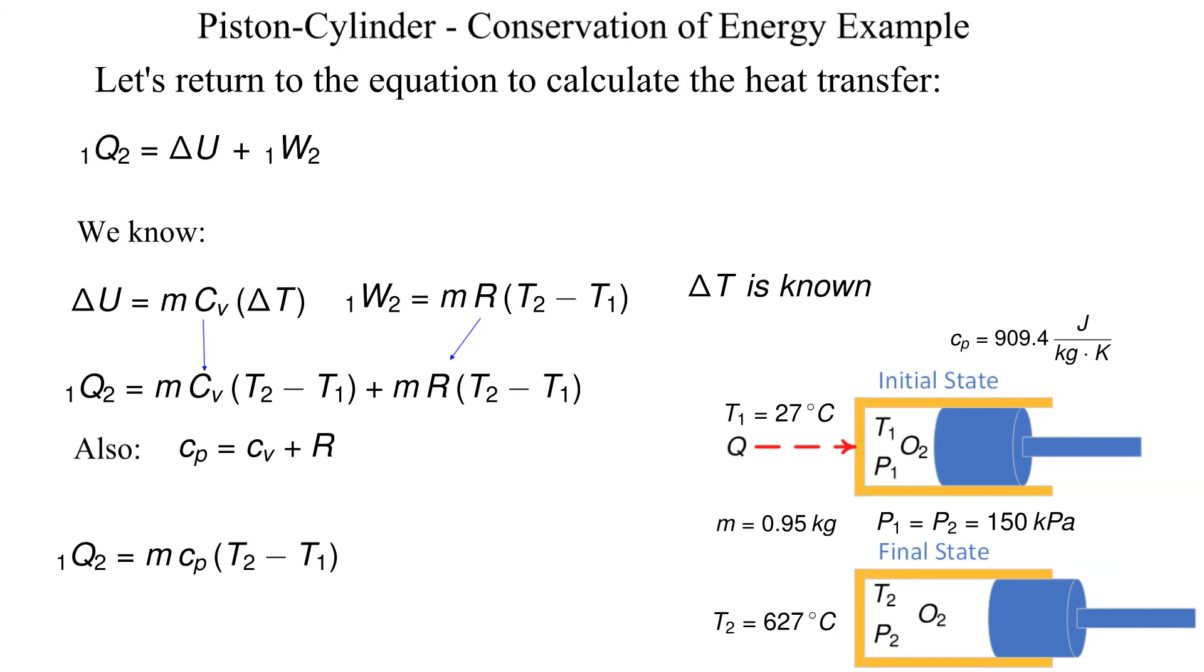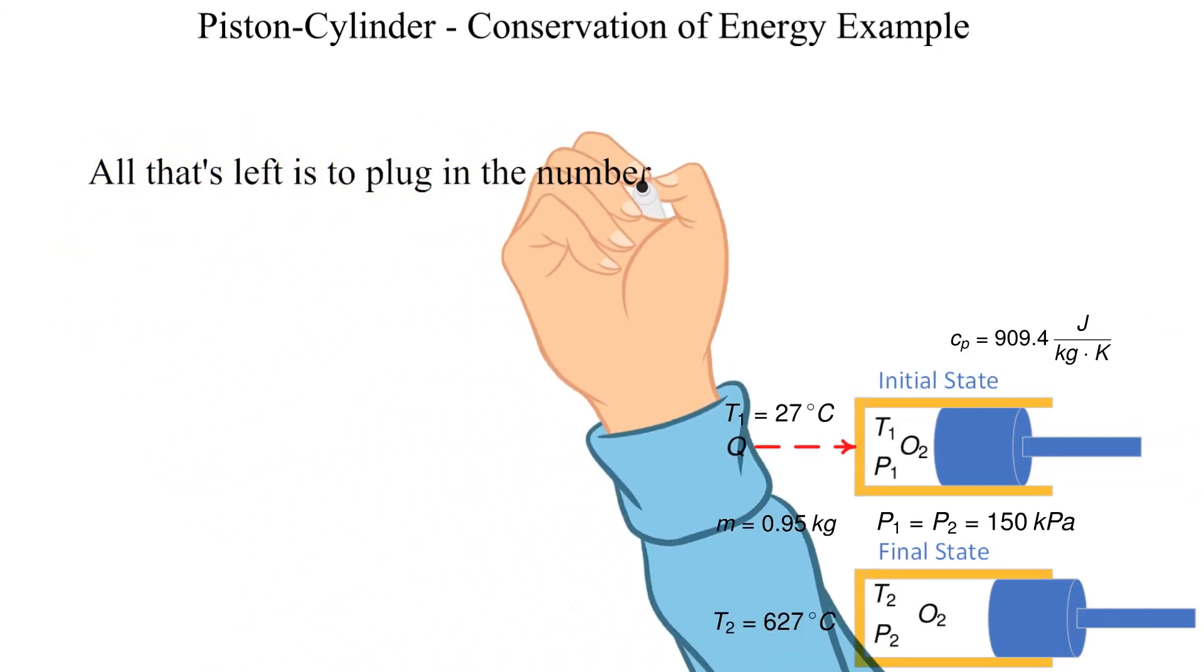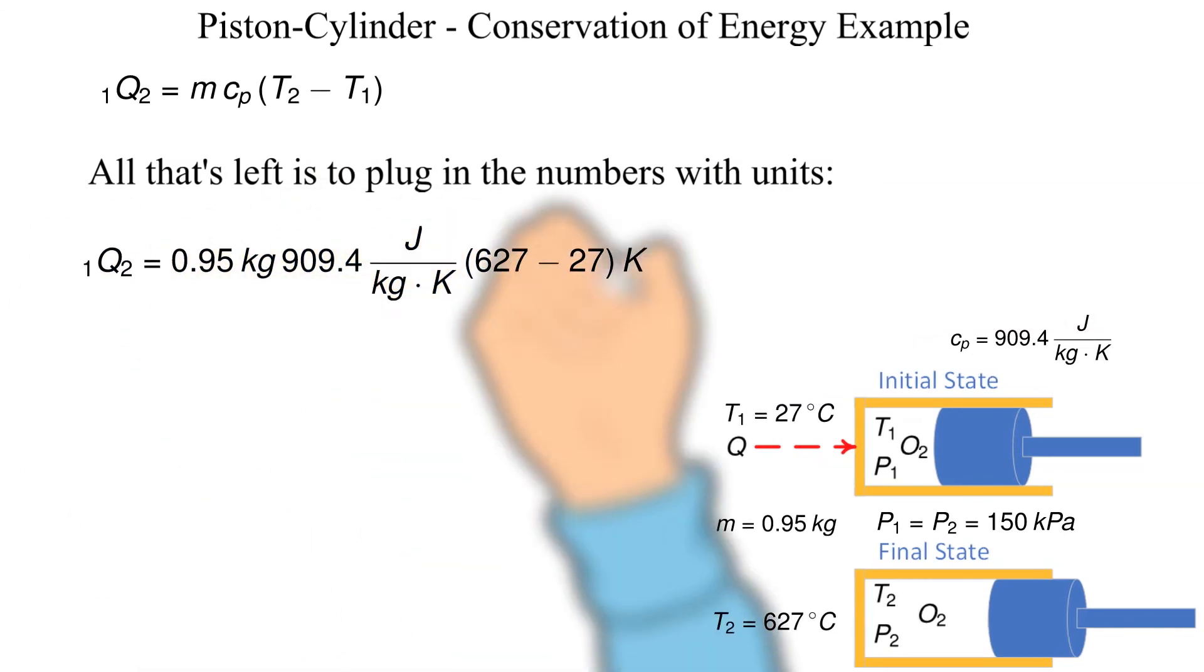This is not surprising since this is a constant pressure process from state 1 to state 2. Plugging in the numbers and units we get the energy added from state 1 to state 2 is equal to 518.4 kilojoules.